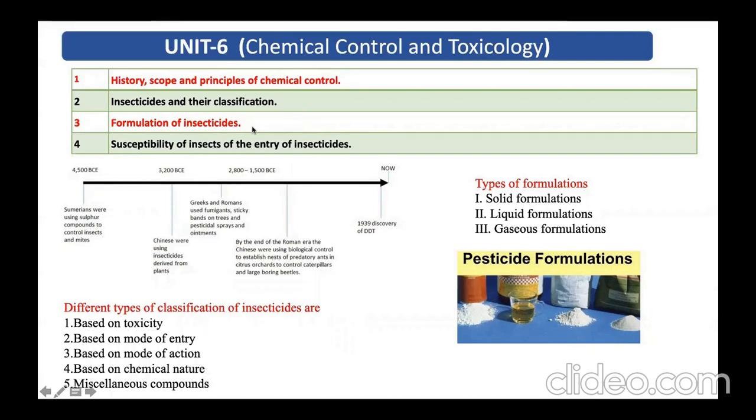Then coming to the third topic, that is formulation of insecticide. Formulation is a product which is sold in the market which contains the active ingredient, that is chemical, and then your formulant and adjuvant. Adjuvant is the substance which is used to increase the efficiency of insecticide. There is solid formulation like dust, granule, your water dispersible powder, water soluble granule. Then coming to liquid formulation: soluble liquid, ultra low volume concentrate liquid, emulsifiable concentrate. Then gaseous formulation: your aerosols, fumigants, those all come under gaseous formulation.